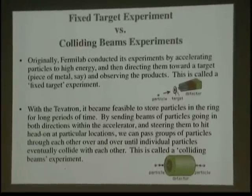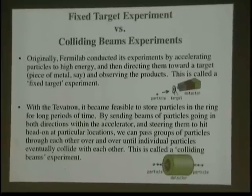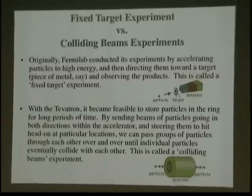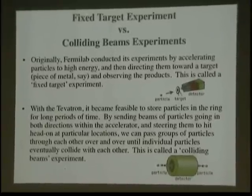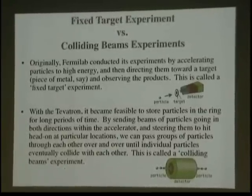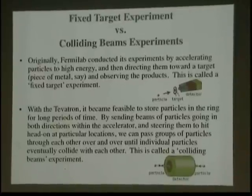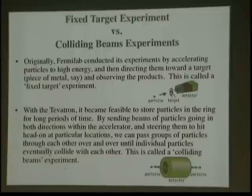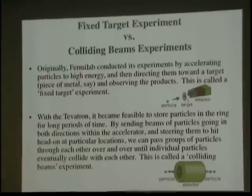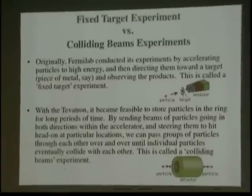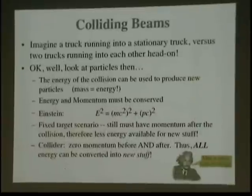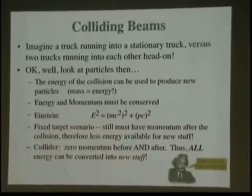With the Tevatron and its storage ring capability, it became feasible to store particles in the ring for a long time — hours or days. We could send particles in both directions in the Tevatron simultaneously, steer them to hit each other head-on at particular locations, and put a detector at that predetermined collision point. We call this a colliding beams experiment, because it's head-on at some predetermined point. That's the main physics program in the Tevatron we have today.